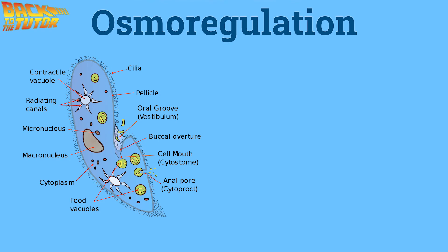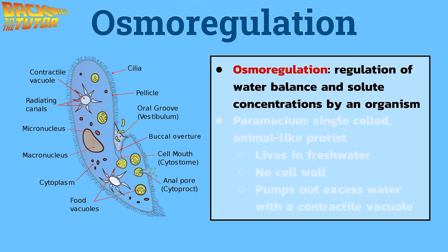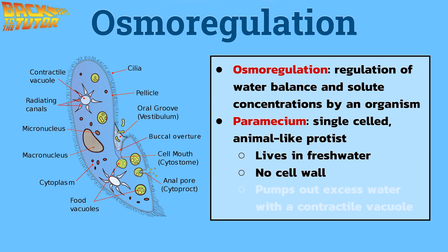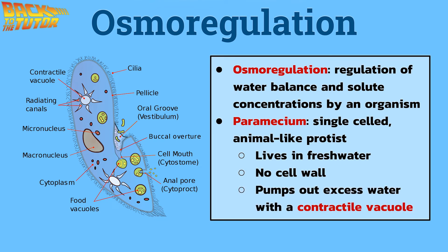Maintaining proper water and solute balance is very important for the survival of cells without cell walls. This is why organisms have developed methods of osmoregulation, which is the regulation of things like the movement of water and solute concentration by an organism. An interesting example is seen with the paramecium, which is a single-celled animal-like protist. Paramecia live in fresh water, which has a very low solute concentration and therefore a high water potential. Paramecia have a lower water potential than their environment, so water is constantly flowing into them. Since a paramecium has no cell wall, if too much water entered it would burst. So in order to live in these hypotonic environments, the paramecium has a contractile vacuole, which pumps out excess water as it enters.